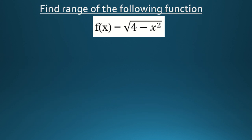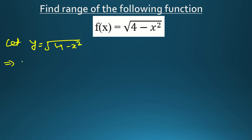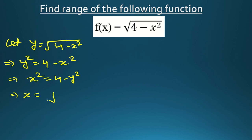Now let's look at some questions based on this step. Here the function is f(x) = √(4 − x²) and we have to find the range. The first step: let y = √(4 − x²). Now we find the value of x in terms of y. We square both sides: y² = 4 − x², so x² = 4 − y², and therefore x = √(4 − y²). Also note that f(x) will always be greater than or equal to 0.